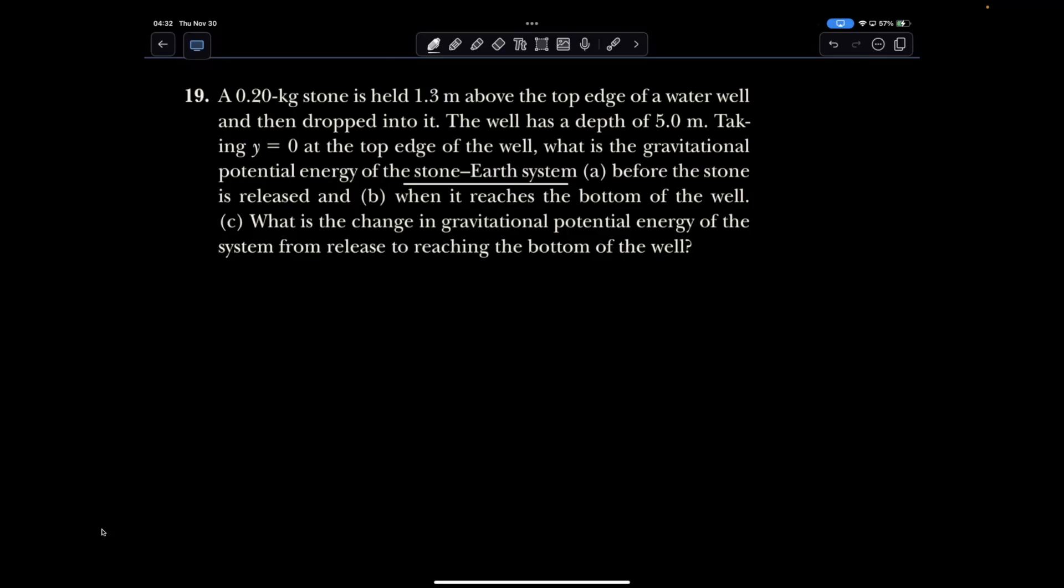Number 19 is all about potential gravitational energy. You remember UG equals MGH. H is the predicament in this case. We need to really read into what it is that they want us to find relative to which level.